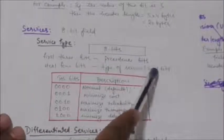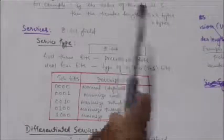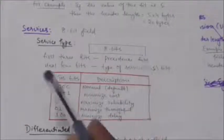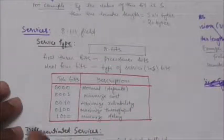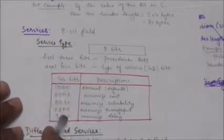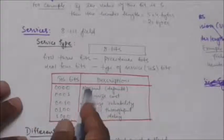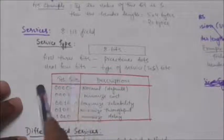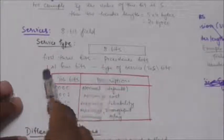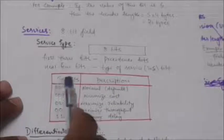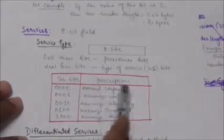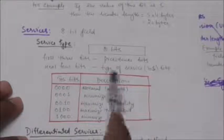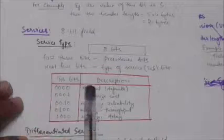The Type of Service subfield is a 4-bit subfield where each bit has a special meaning. In this subfield, one and only one of the bits can have the value of 1 in each datagram. With only one bit set at a time, we can have five different types of service, as shown in this table.